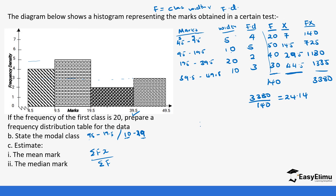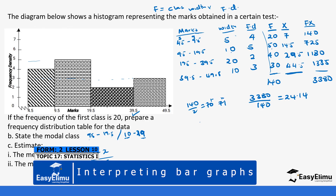To find the median class, since n = 140 is even, we do 140 ÷ 2 = 70, so we look at the 70th and 71st values. Using cumulative frequency: the first class has frequency 20, and the second class has frequency 50, giving a cumulative frequency of 70. Both the 70th and 71st values fall in the class 9.5 to 19.5, so that is our median class.